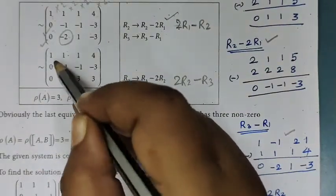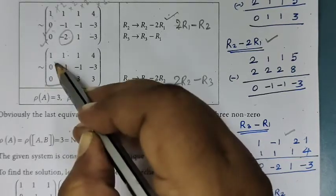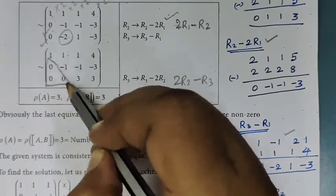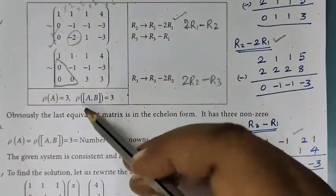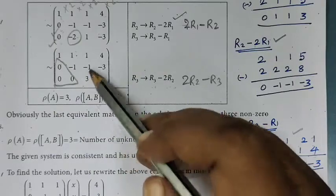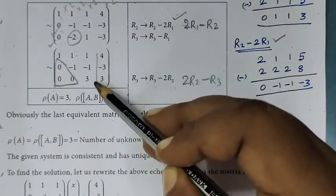As you see, this is the echelon form. It has three non-zero rows. Row of A is 3, and row of augmented matrix is 3.